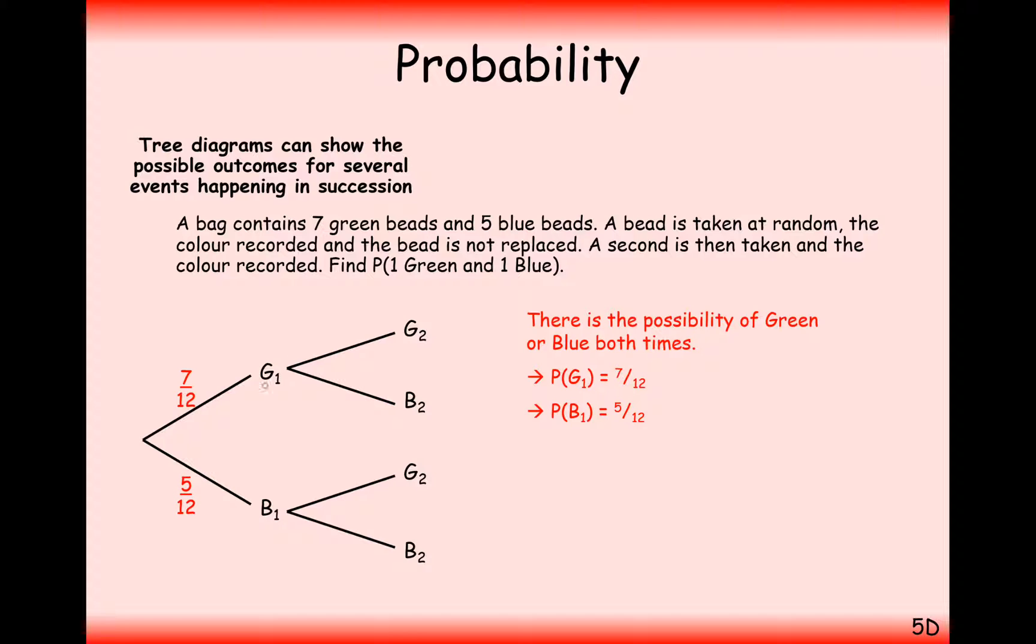So seven out of twelve probability for picking a green first of all. Five out of twelve for pulling a blue out of the bag first of all.